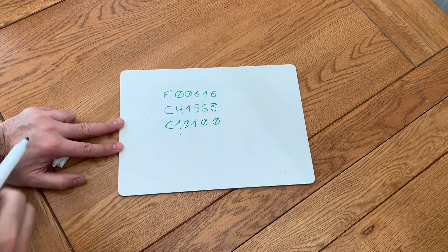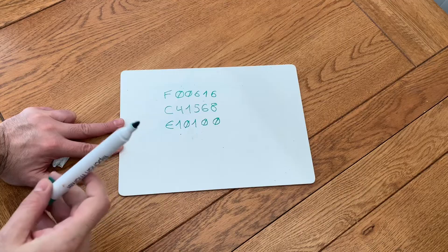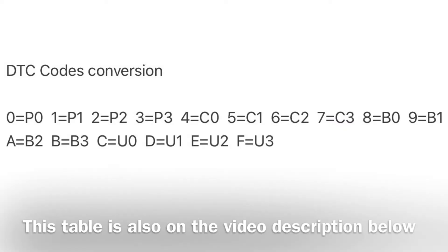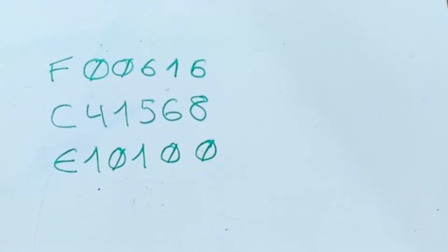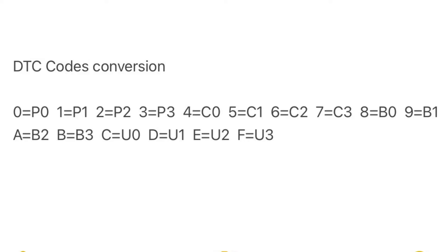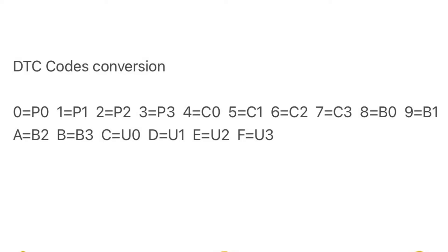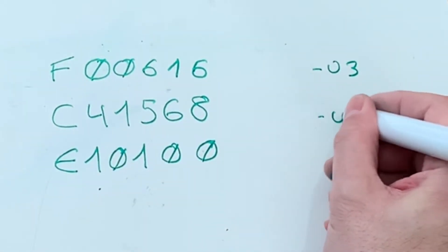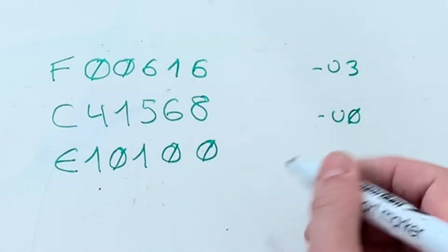First of all I would like to excuse my handwriting. Let's start from the principle that you've got these three codes coming up on your cluster screen. These codes do not correspond to OBD codes so they have to be decoded to the corresponding OBD letter. On the display, F translates to OBD code U3, C corresponds to OBD letter U0, and E corresponds to OBD letter U2.